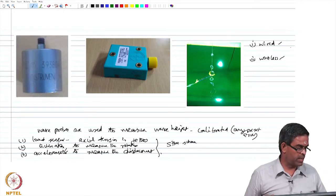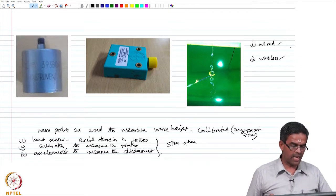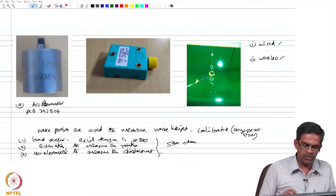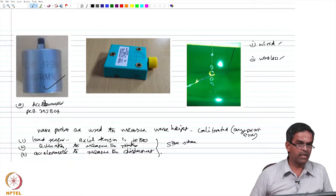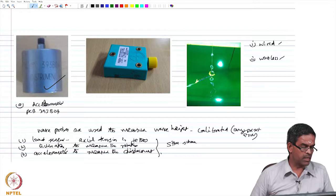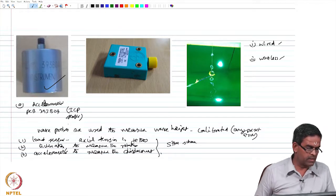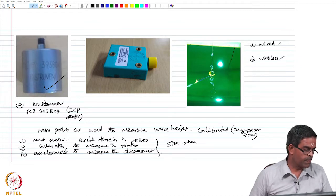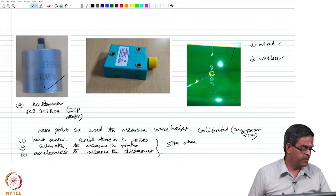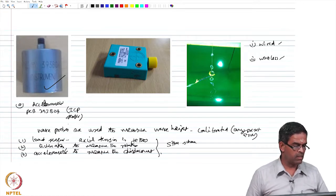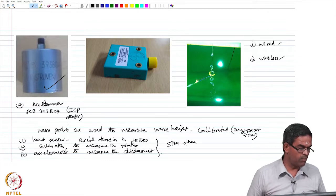The accelerometer we have used is PCB 393B04, which is a piezoelectric ICP sensor - integrated circuit piezoelectric sensor - used to measure the acceleration time history over a definite period of time. This can also measure dynamic pressure, force, and strain values. In the present study, this is used to measure surge, sway, and heave displacements of the platform on a scaled model.